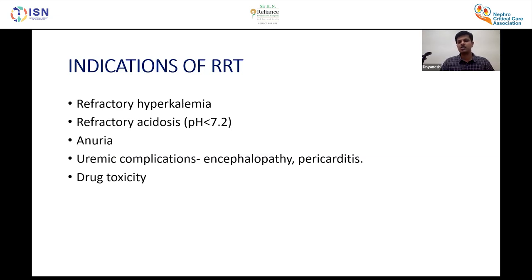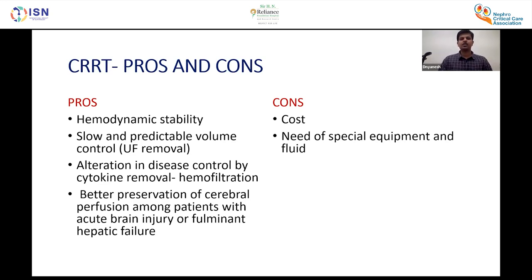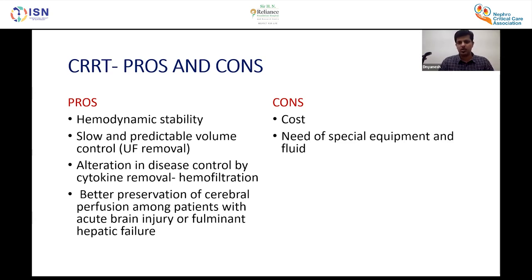Indications for RRT in shock include refractory hyperkalemia, refractory acidosis with pH less than 7.2, anuria, uremic complications such as encephalopathy and pericarditis, and drug toxicity. Advantages of RRT include better hemodynamic stability, slow and predictable volume removal, cytokine removal especially with hemofiltration, and better cerebral perfusion preservation. The main disadvantage is cost — it requires special equipment and fluids.